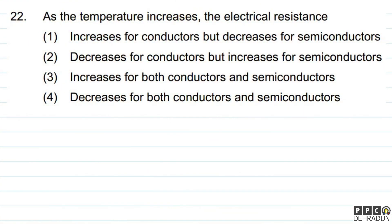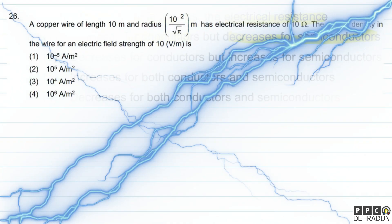So from this, children, we can understand that as temperature increases, electrical resistance — in the case of conductors it increases, but in the case of semiconductors it starts decreasing.